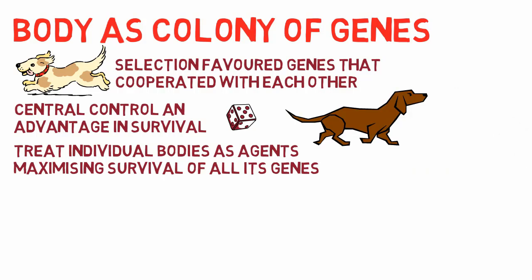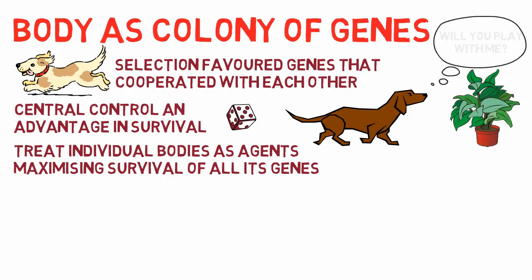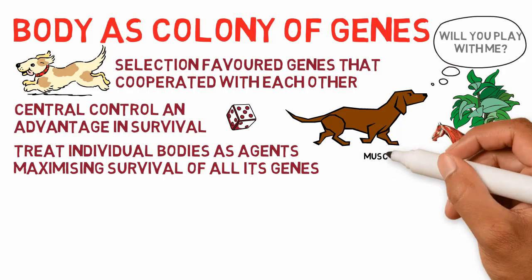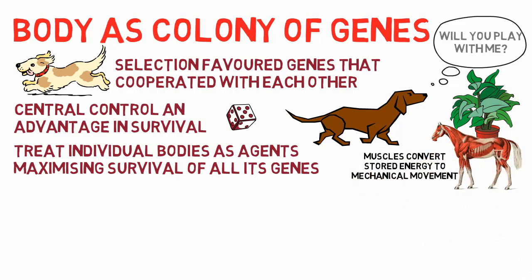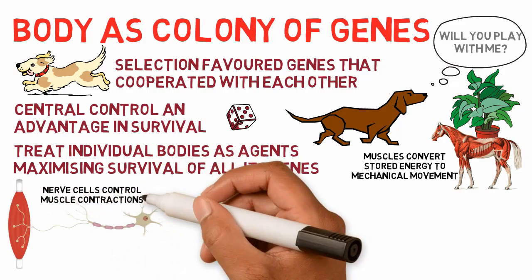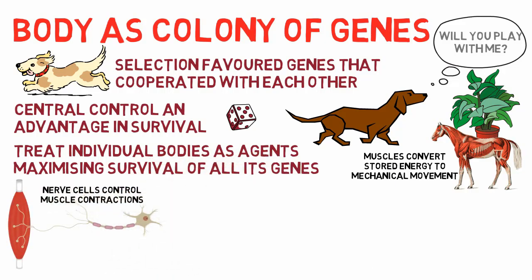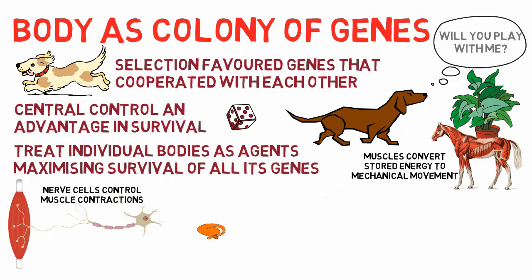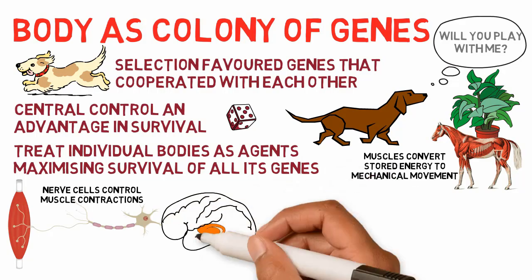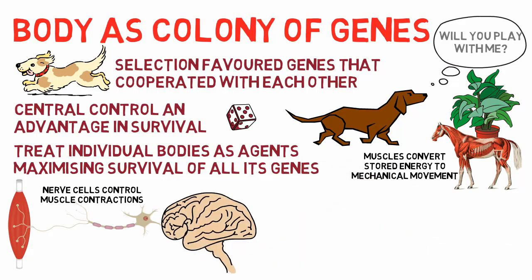Unlike plants, animals have evolved ways of moving hundreds of thousands of times faster, with movements that are reversible and repeatable. Muscles have allowed rapid movement, using stored energy to generate mechanical movement. Survival machines use neurons and nerve cells to control the timing of muscle contractions. Eventually, dense concentrations of nervous tissue became the ganglia, or in larger concentrations, the brain — which became important for controlling and coordinating movement.